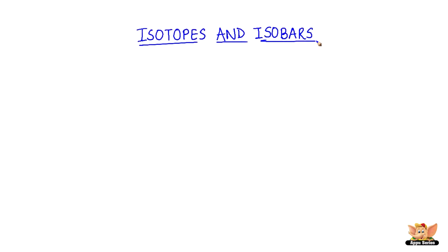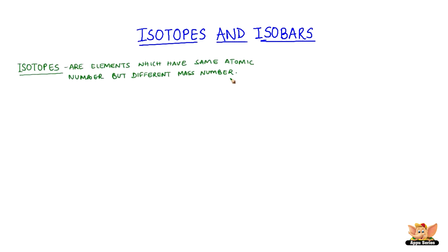Isotopes and isobars. In nature, few elements have been identified which have the same atomic number but different mass number. These are named as isotopes. Isotopes have similar chemical properties but different physical properties.